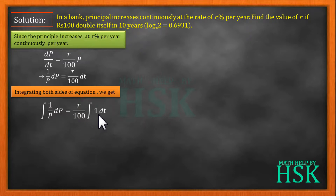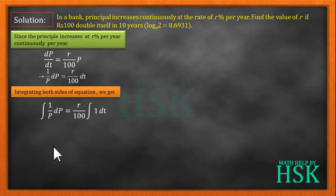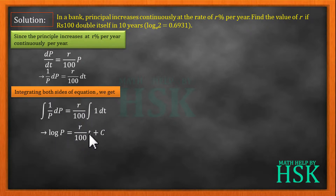Integration of 1/p with respect to p gives log p, and the right side gives r/100 times t. So we get: log p is equal to r/100 into t plus c. Further converting this expression into exponential form,